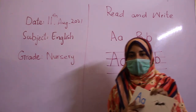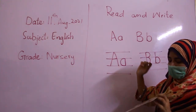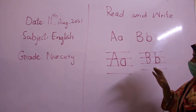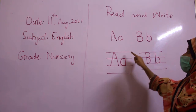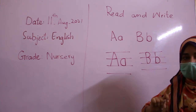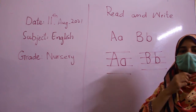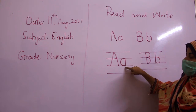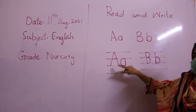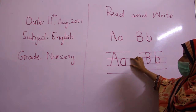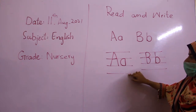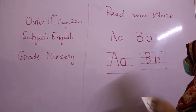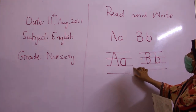A for apple, A for aeroplane. So students, how to write A and a: we have four lines in our copy — one, two, three, four. We use the first three lines to write small a. We use a two-meter line of four lines for capital A.